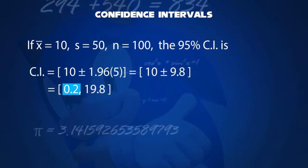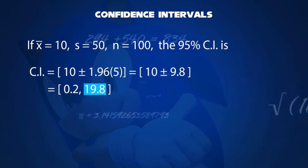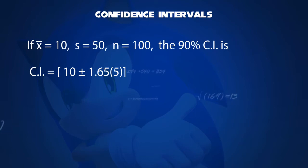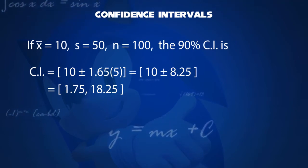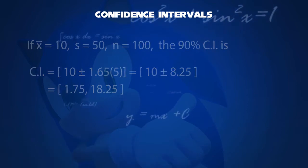The least value is 0.2 since we used a negative sign, and the highest value 19.8 used a positive sign. If we change the confidence interval to 90% in the same example, the z value will be equal to 1.65. Now, what do you obtain? The interval obtained is 1.75 and 18.25.